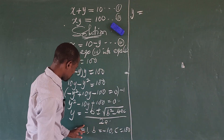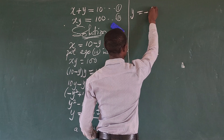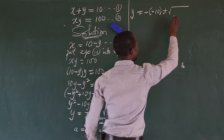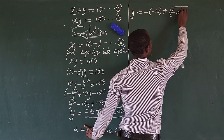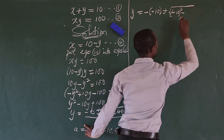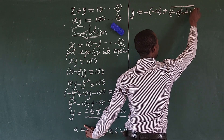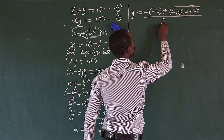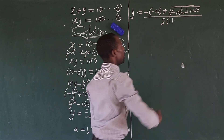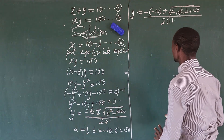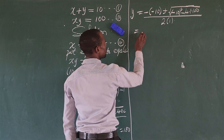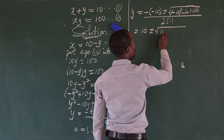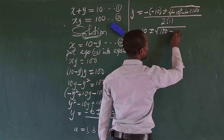Substituting, y equals minus of minus 10, plus or minus the square root of minus 10 squared minus 4 times 1 times 100, all over 2 times 1. This simplifies to 10 plus or minus the square root of 100 minus 400, all over 2.